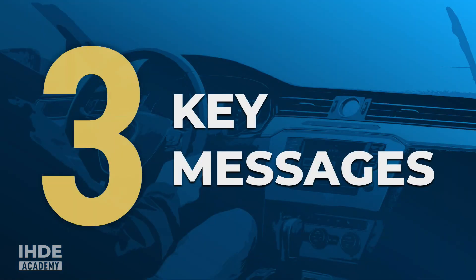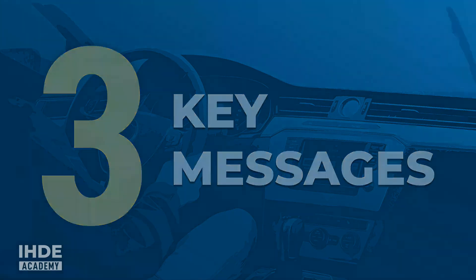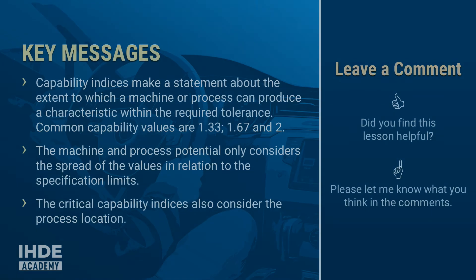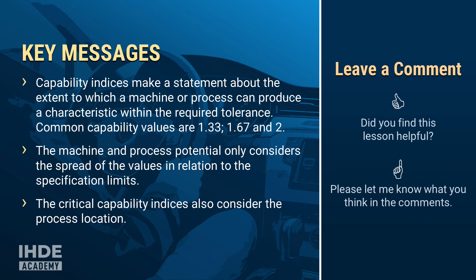That was a lot of new information. To conclude, here are the three most important key messages: Capability indices make a statement about the extent to which a machine or process can produce a characteristic within the required tolerance. Common capability values are 1.33, 1.67, and 2. The machine and process potential only considers the spread of the values in relation to the specification limits, while the critical capability indices also consider the process location. If you found this lesson helpful, please leave a comment. Take care and see you next time.